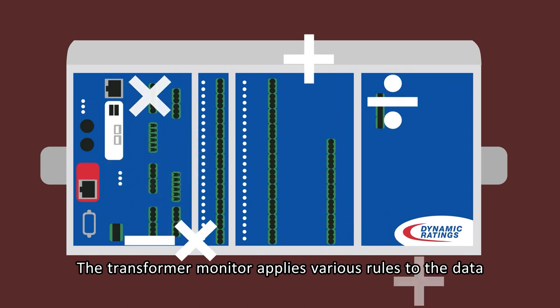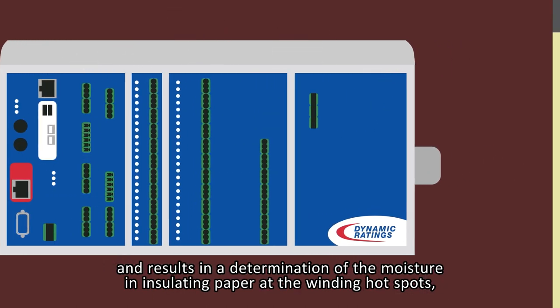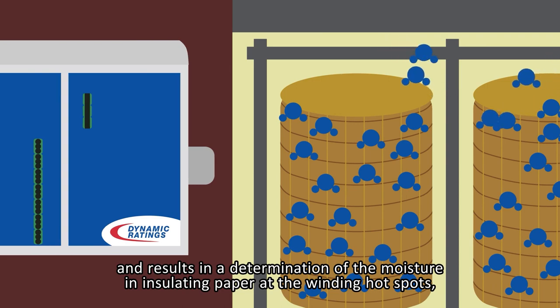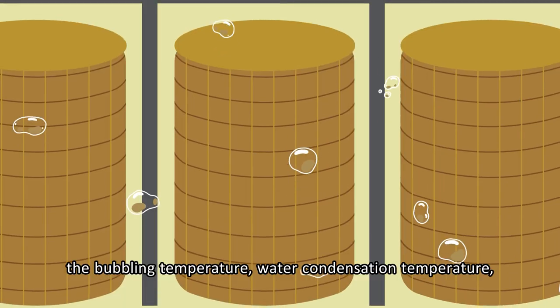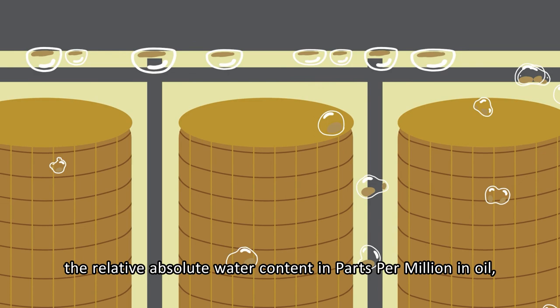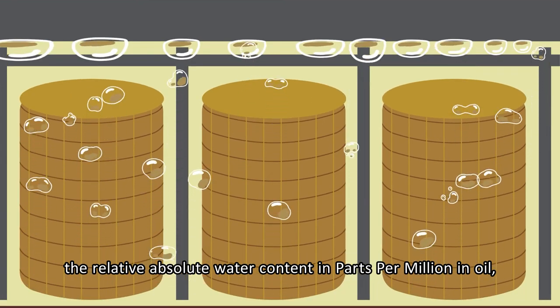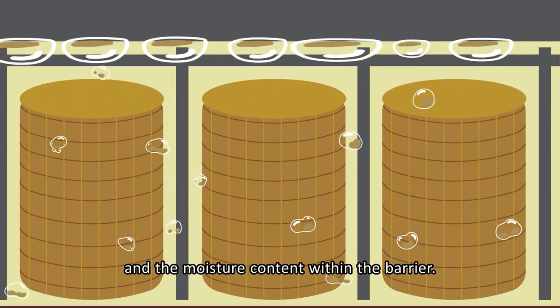The transformer monitor applies various rules to the data and results in a determination of the moisture in insulating paper at the winding hotspots, the bubbling temperature, water condensation temperature, the relative absolute water content in parts per million in oil, and the moisture content within the barrier.